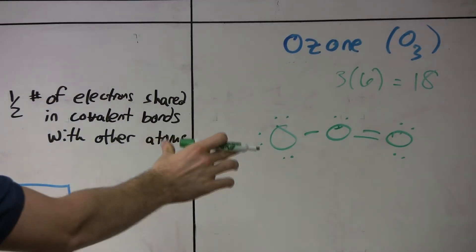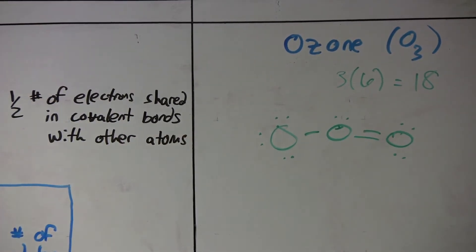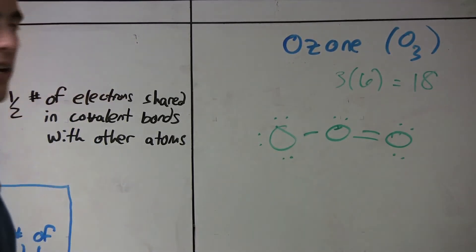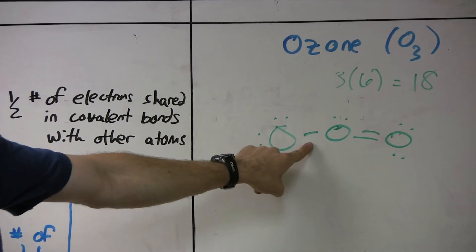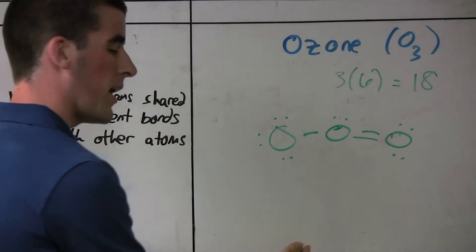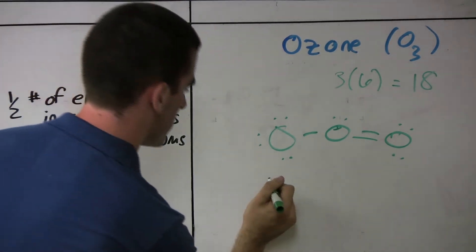But let's apply this rule to each atom here and see what the formal charge is. So for the first one, we have six minus one. That's the number of sticks, minus six, the number of dots. So six minus six minus one equals negative one. That's the formal charge for this oxygen.